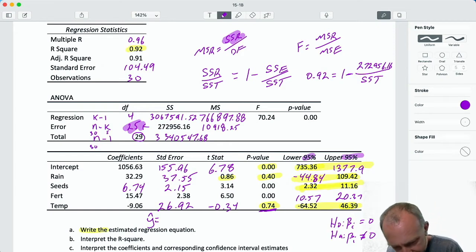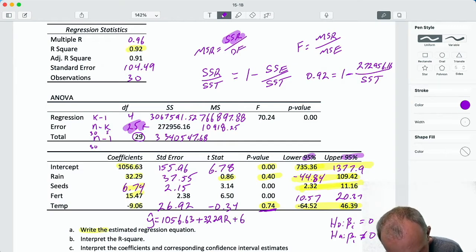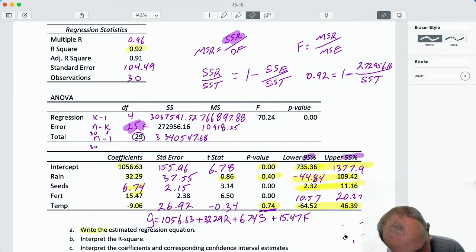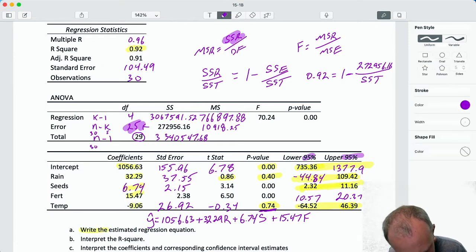So if we write this out, I have my intercept is 1056.63 plus 32.29 rain plus 6.74 seeds plus 15.47 fertilizer plus, nope, minus 9.06 temperature. Okay, so we've got our estimated regression equation.